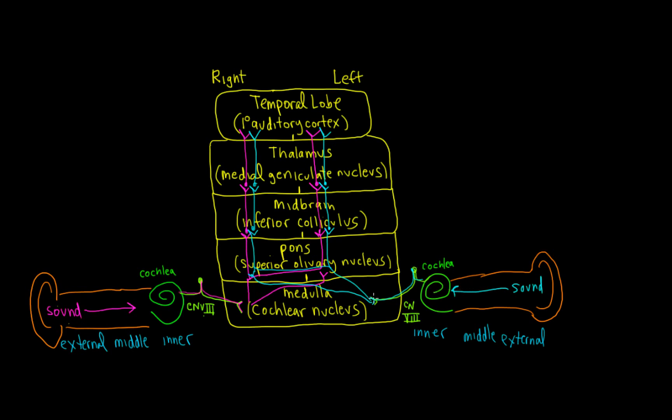Sound on the left ear coming in follows the same idea, shown in a different color to represent this point. Once we get past the cochlear nucleus, we can see that we have magenta and blue all the way up on both sides.